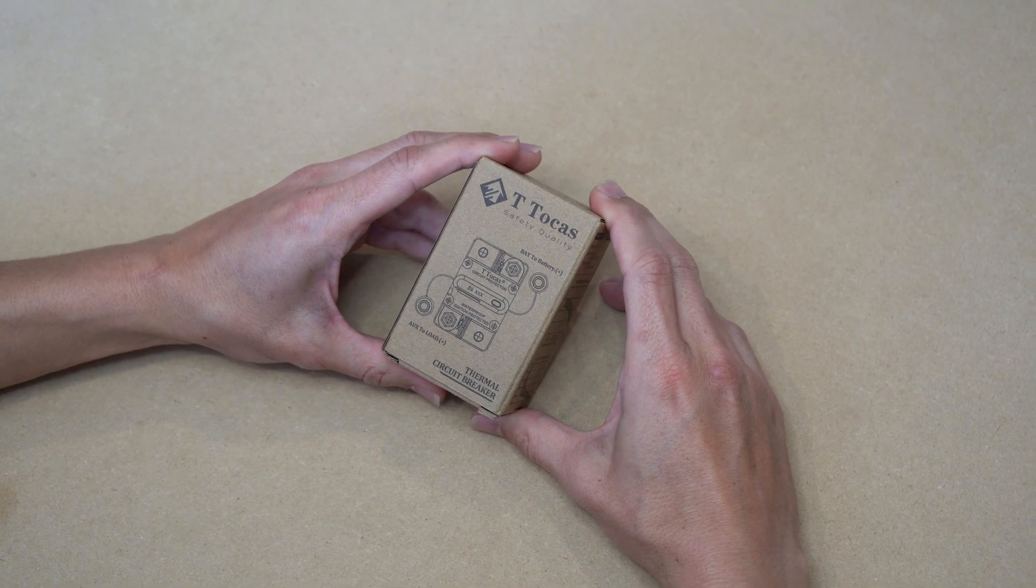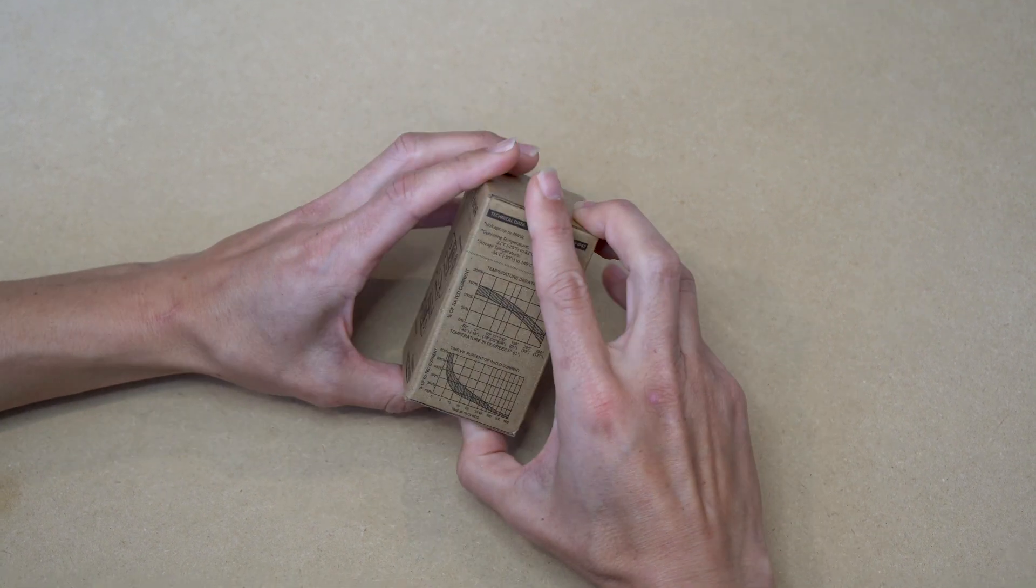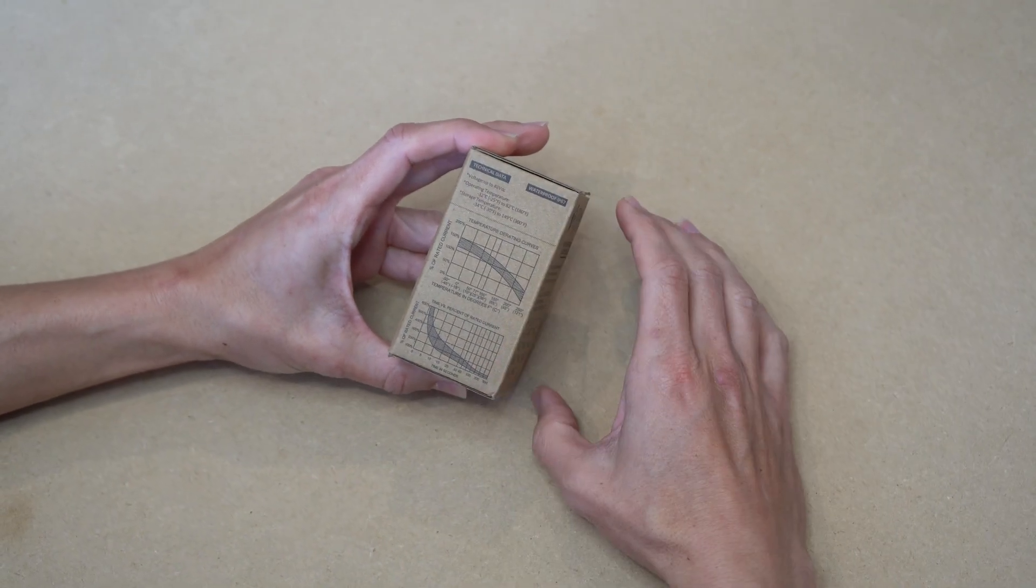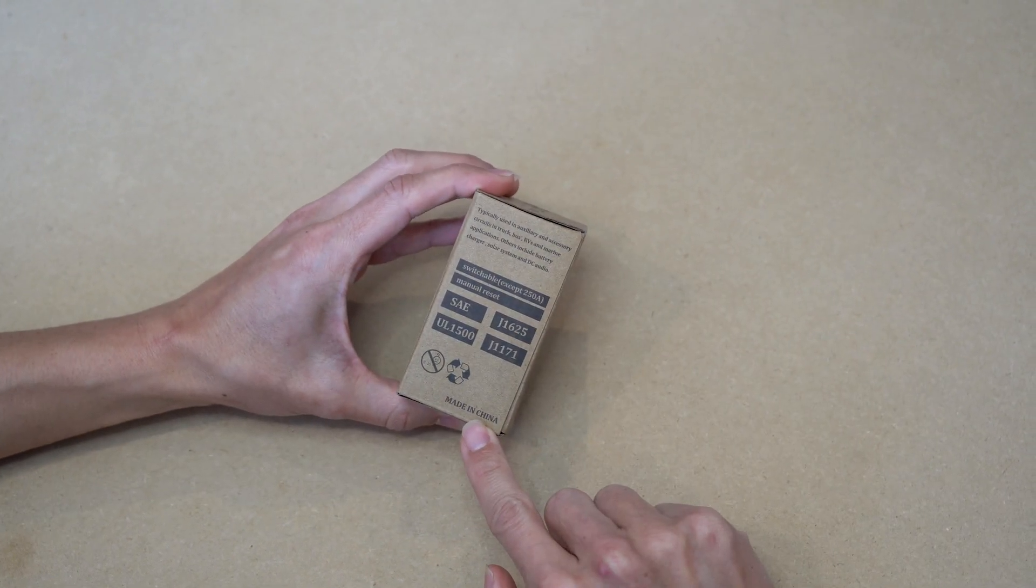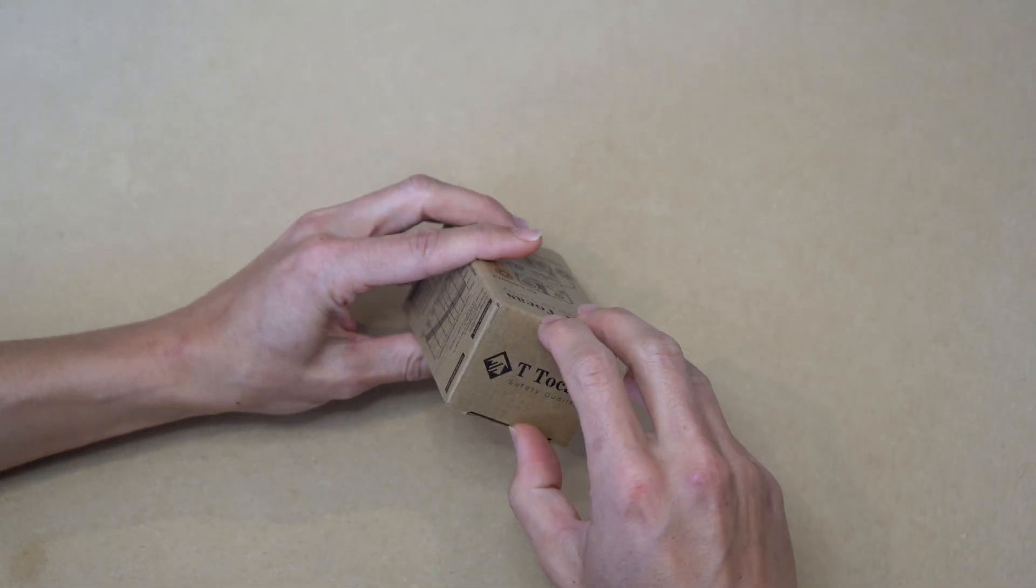When you first receive this product, it comes in this nice cardboard box, which includes temperature and time graphs. And for those interested, this breaker is made in China. Now we're going to open this box and take out the contents.